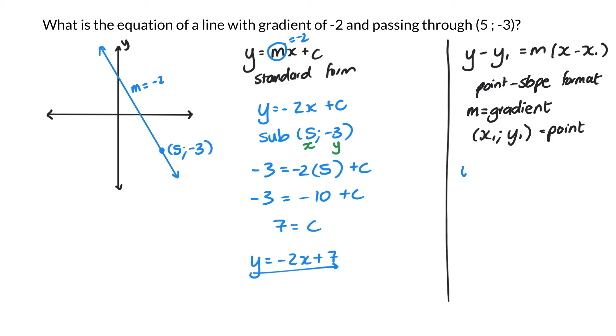So the nice thing about this method is that you can substitute in straight away. So I'm going to say y minus y1, which will be my point. If I consider my point, it will be 5 and negative 3. So y minus negative 3 equals my gradient, which was negative 2, times x minus x1, which is 5. So y plus 3 equals negative 2x plus 10. And then I can rearrange what I have. Y equals negative 2x plus 7.